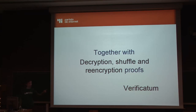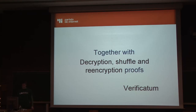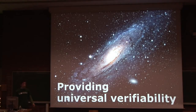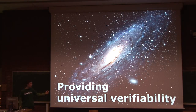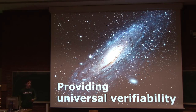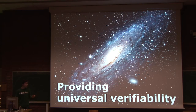Verificatum is the system we use for all these mathematically complex processes — software made by cryptographers from Switzerland. These proofs provide universal verifiability, so even if the voting is corrupt, you will know it. Your vote's secrecy could be broken only if all trustees are corrupt, but you will still know that the voting is corrupt.